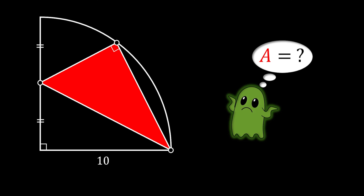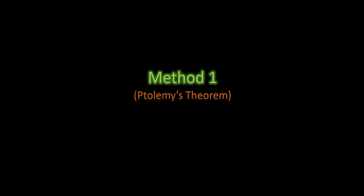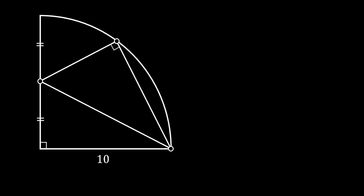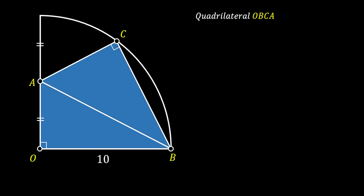If you want to try this for yourself, pause the video and come back to check the solution. I will offer three different geometric methods to solve this problem. In the first method we will use Ptolemy's theorem — by far my favorite method. We start by labeling the vertices of our triangle as A, B, and C, and the center of our quarter circle as O.